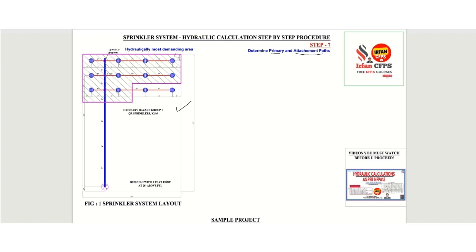As we already told, this is most likely to be the hydraulically most demanding sprinkler. So now what we will do, we just try to draw one isometric. We are going to erase this and draw clearly once again.